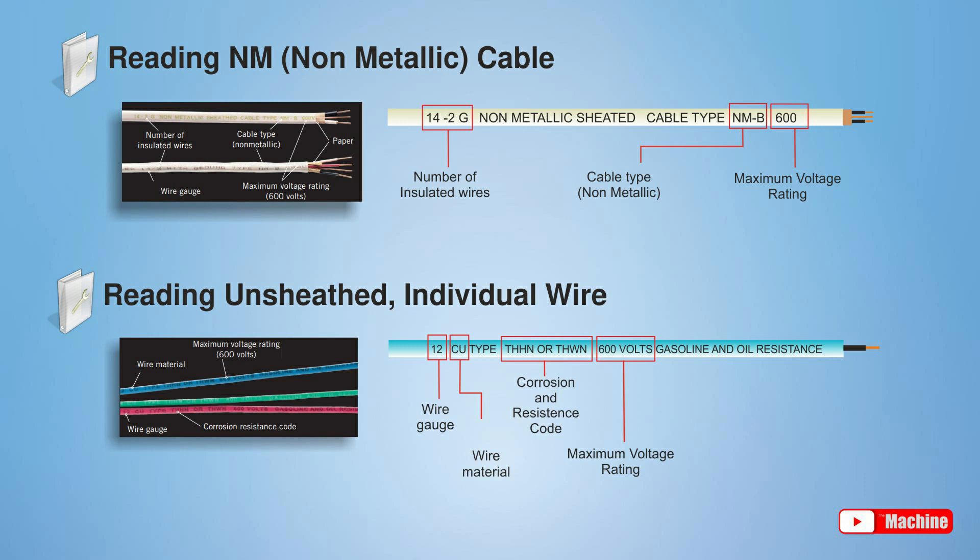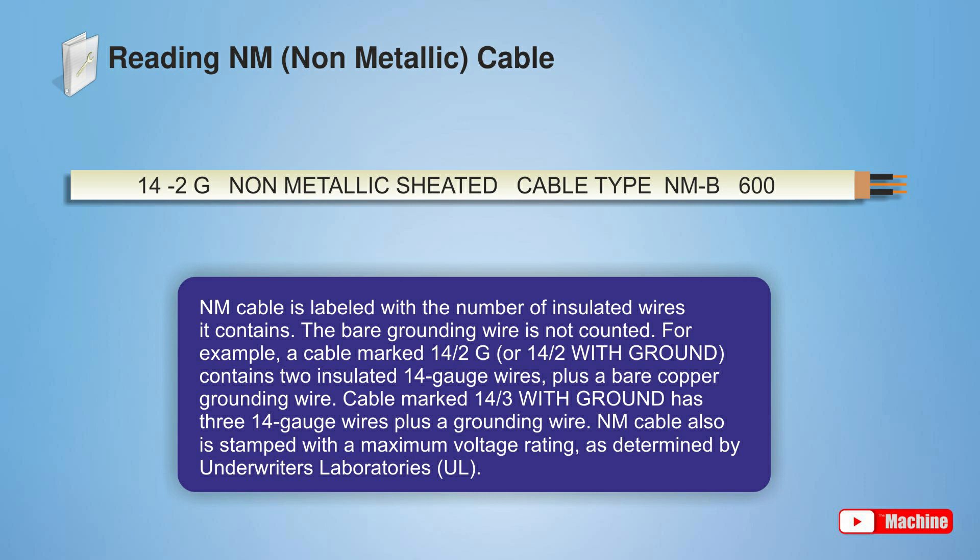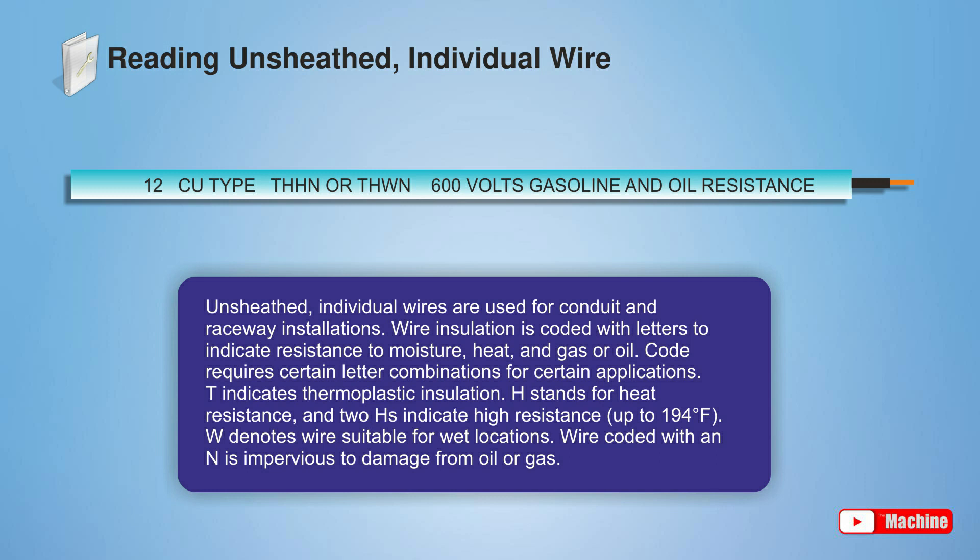Let's take a closer look and check the wire label indication meaning. 14 is the wire gauge, and 2 indicates the number of insulated wires. NM is the cable type, meaning non-metallic. 600V means the maximum voltage rating. For unsheathed wire, 12 means wire gauge. CU is the wire material, meaning copper. THHN, as mentioned before, is the resistance code. And 600V is the maximum voltage rating.